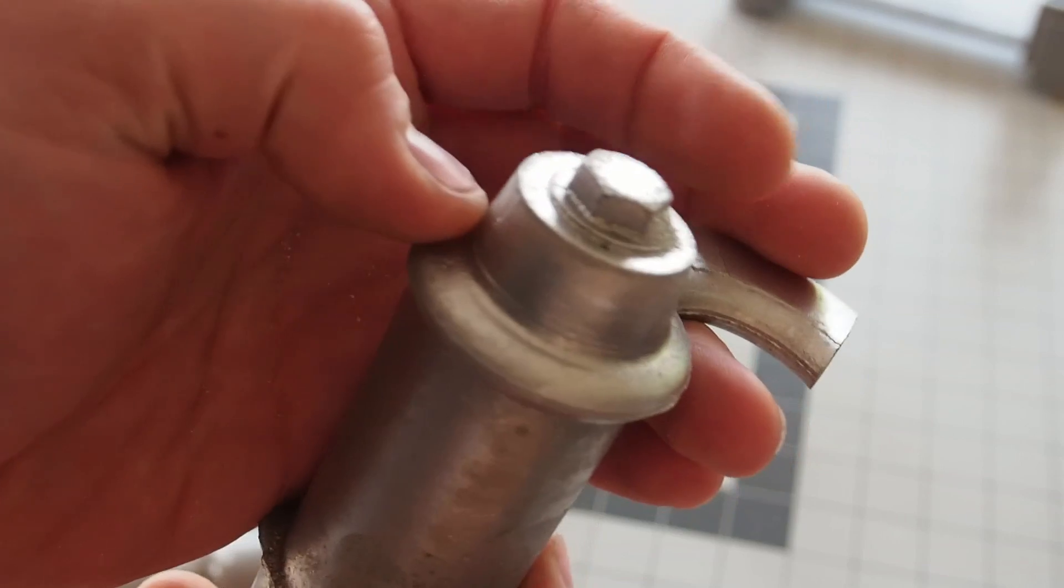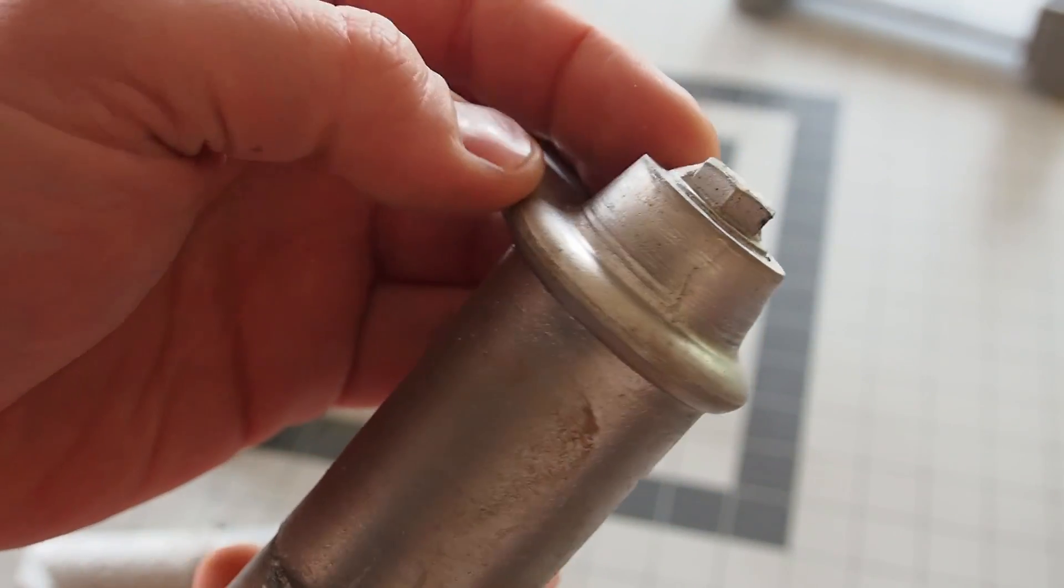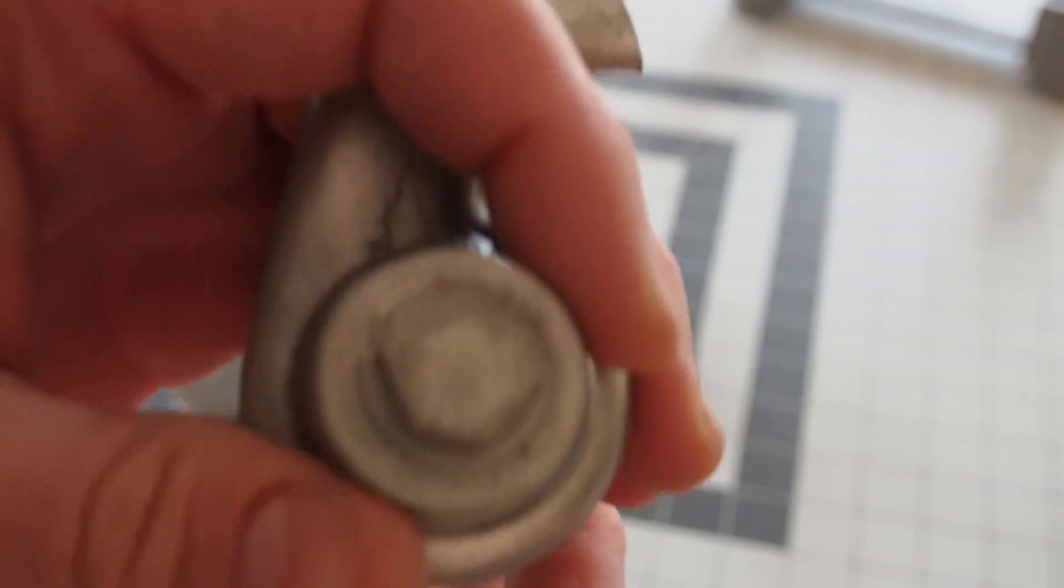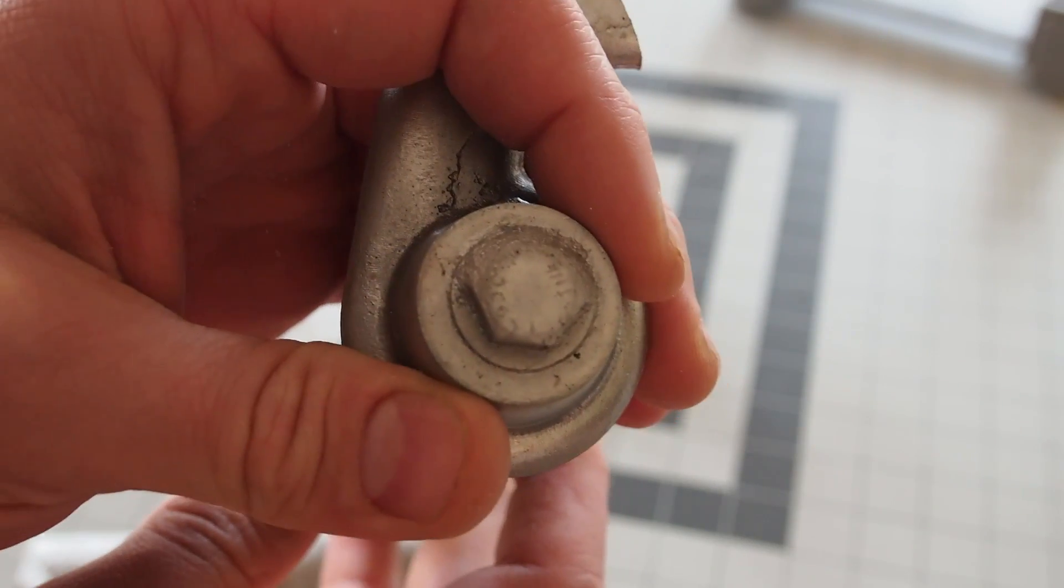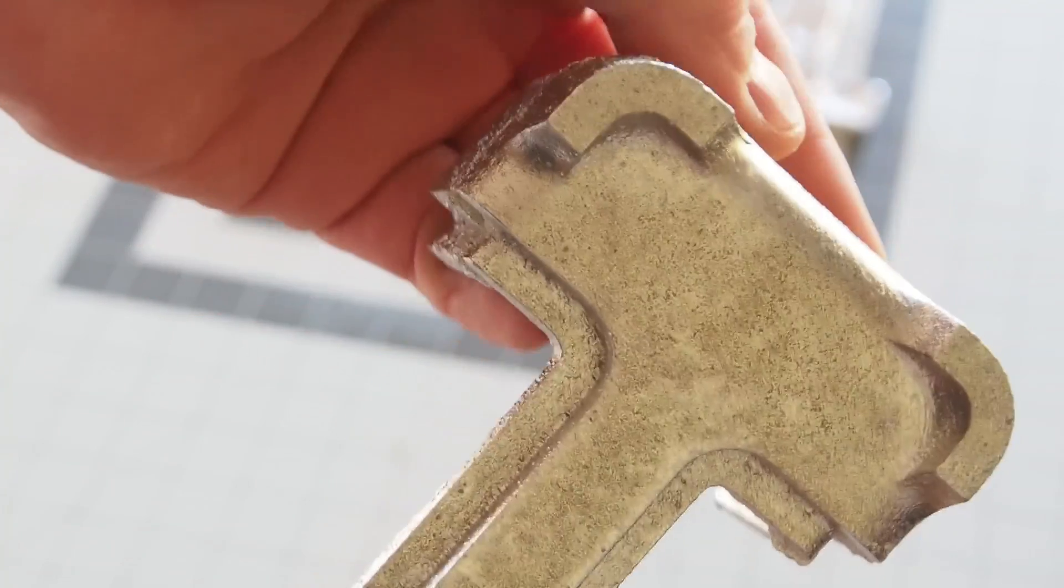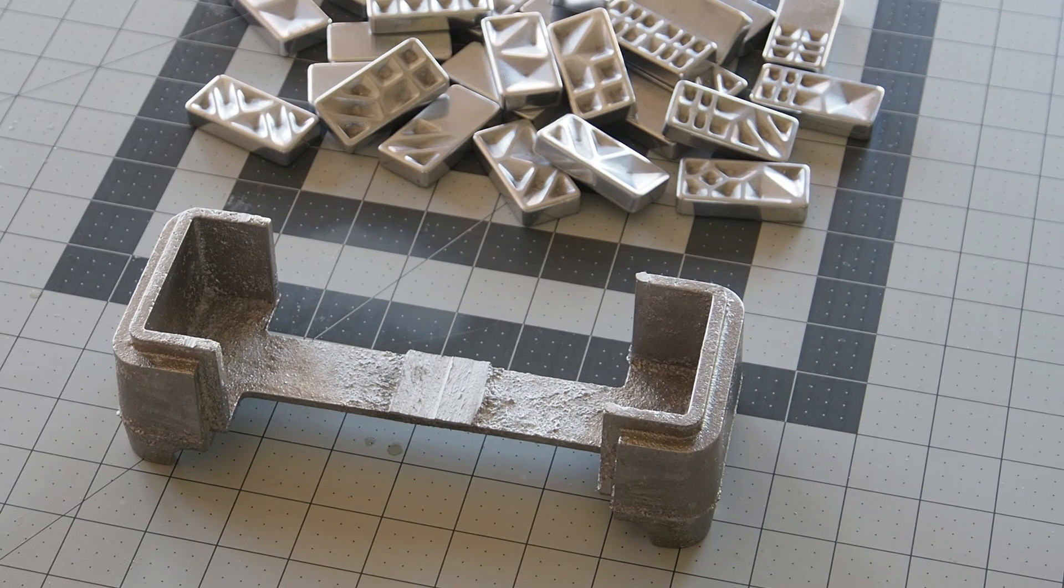This is one of the sprues from the domino cast. If you look closely, you can even read the letters on the cast bolt head. Next, I'm going to start to finish this rough casting and begin working on the lid.